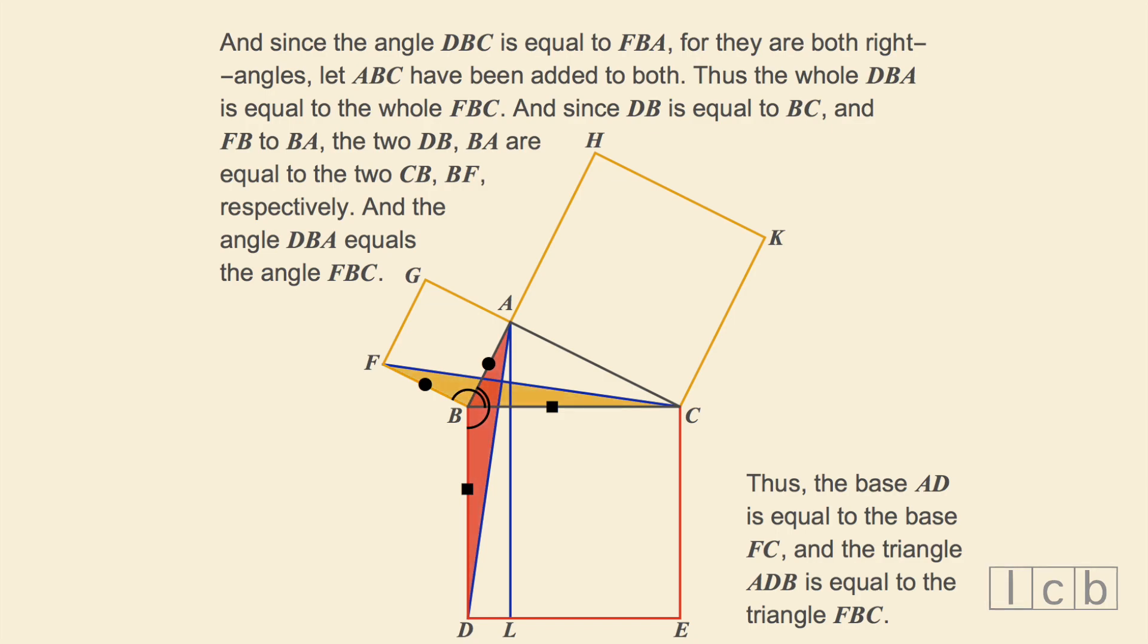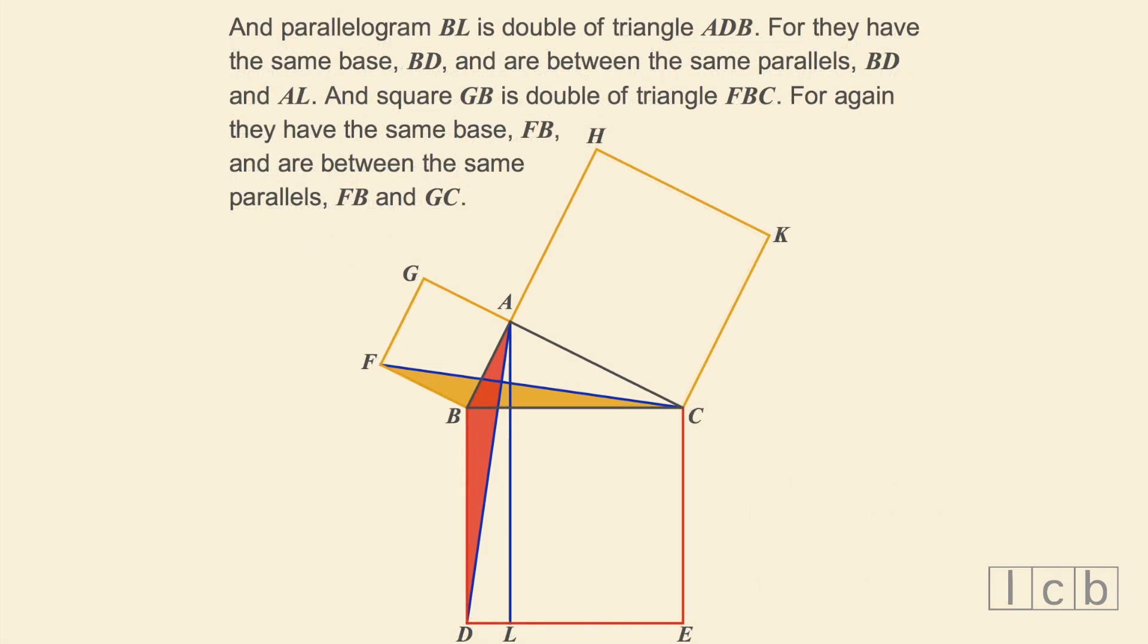Thus, the base AD is equal to the base FC, and the triangle ADB is equal to the triangle FBC. And the parallelogram BL is double of the triangle ADB, for they have the same base, BD, and are between the same parallels, BD and AL.